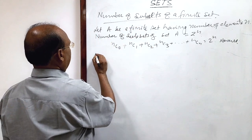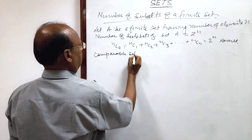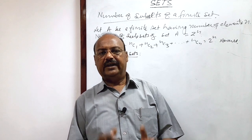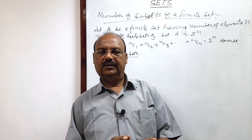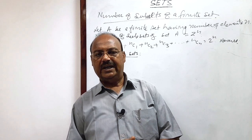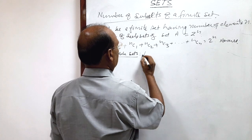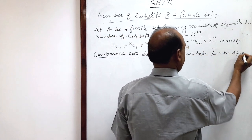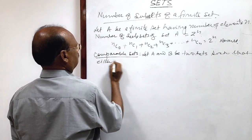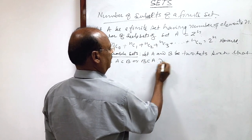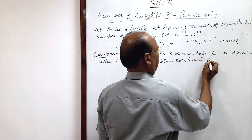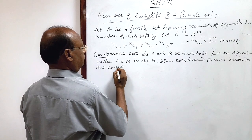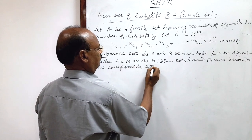Now we will understand what are comparable sets. Two sets A and B are said to be comparable sets if either A is a subset of B, or B is a subset of A — that is, any one of the two is a subset of the other. Then these two sets are known as comparable sets.